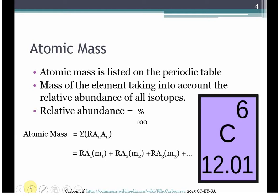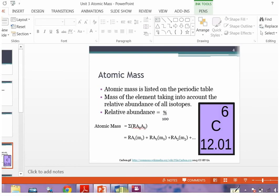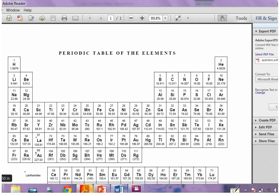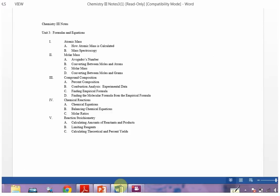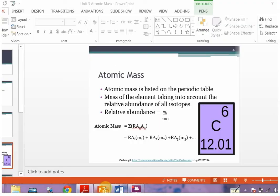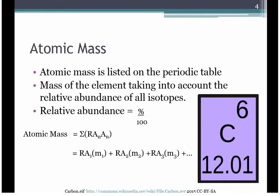So atomic mass is the mass that's listed on the periodic table. Now this is a little different from the one I hand out in class. The one I hand out in class looks more like this. But you tend to get the idea it's just a little colored I guess. So the atomic mass is the one that's listed on the periodic table.